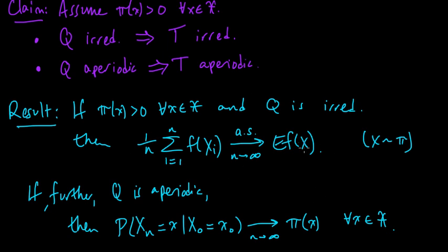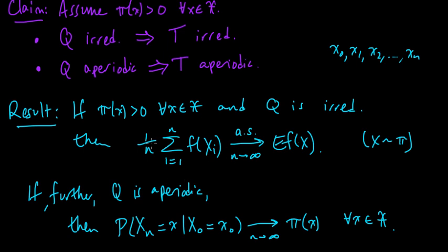One nice property of this formulation is that you can use every single X in the Markov chain — the sequence X_0, X_1, X_2, ..., X_n. Even though they are not independent draws from the distribution and there is considerable dependence between successive ones, we can throw them all into the average and have the asymptotic guarantee that it converges to the right value with probability one.